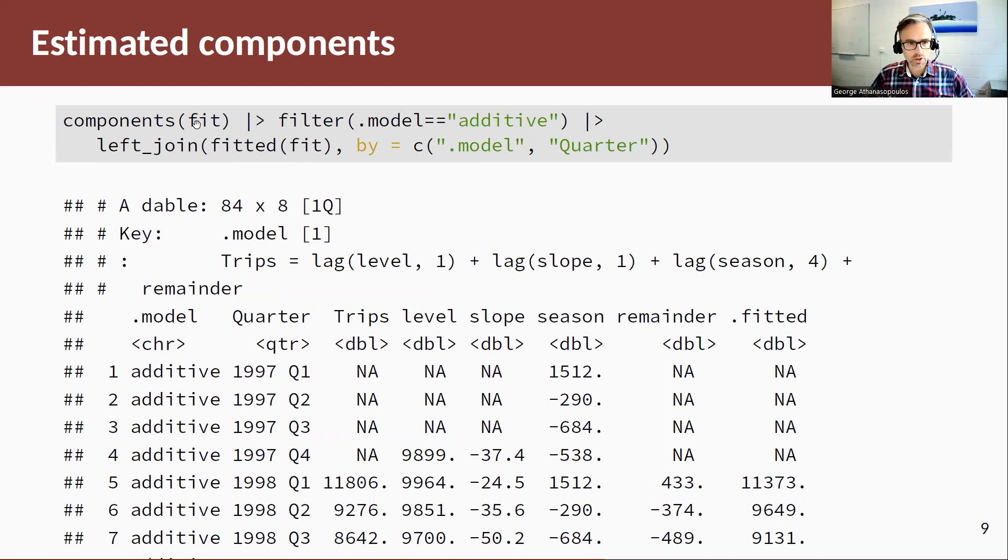We can use the components function and print out the actual components, the estimated components. And I'm also left joining the estimated components with the fitted values just to have a bit of a comparison. So basically here, if we take the first fitted value, Y T plus one conditioned on T is equal to L T plus BT plus S T minus 3. This is for quarterly data.